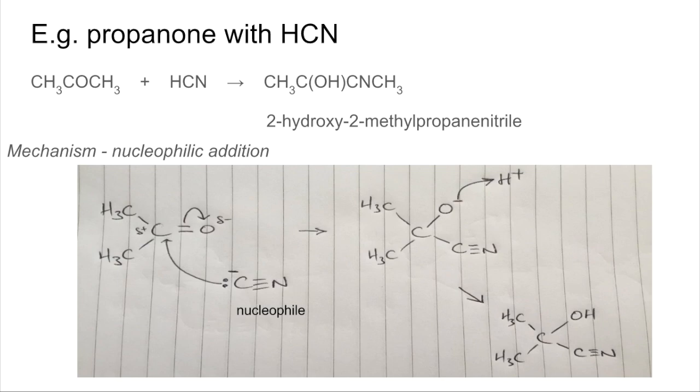And again, the CN- ion is acting as a nucleophile because it's donating a pair of electrons. Just want to go through the name of this. So the CN group is the priority group. The longest chain includes this: one, two, three, so it's three long. This is carbon number one, because this is the main functional group. So that must be carbon number two. So hopefully you can see now why it's called 2-hydroxy-2-methylpropanenitrile.